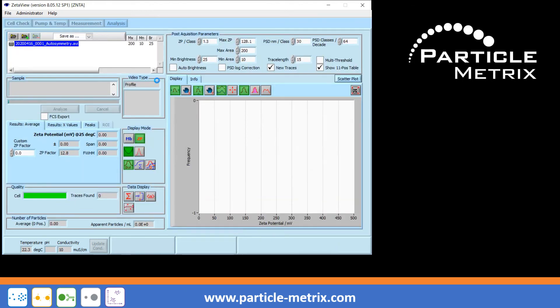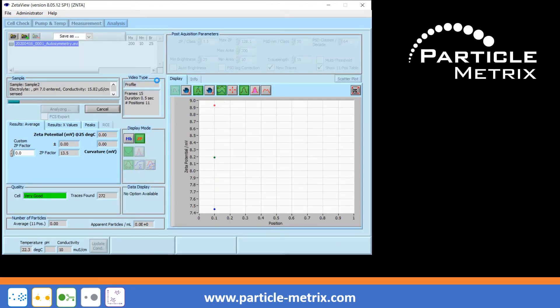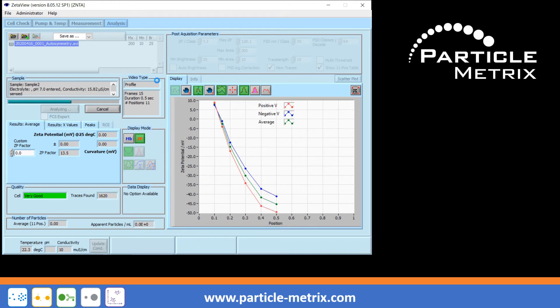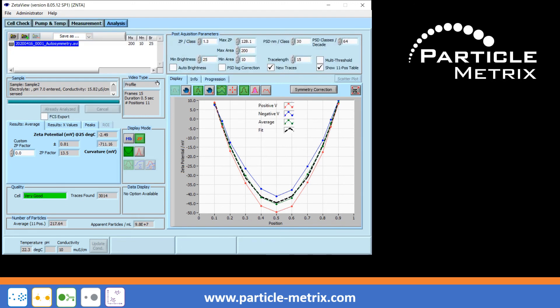As a result, a parabola is displayed. The quality of the parabola gives two statements. First, the symmetry of the profile with respect to the x-axis shows whether the optics has been aligned symmetrically. Any asymmetry will be corrected immediately after this test measurement.